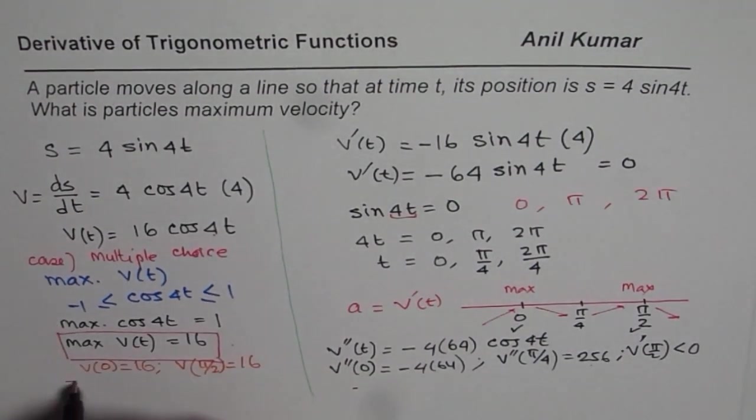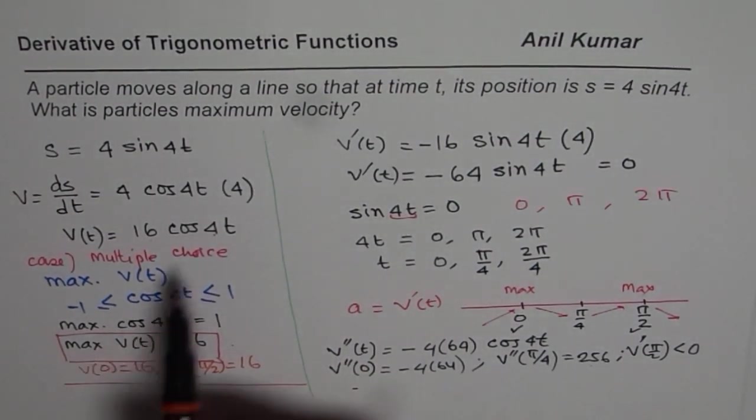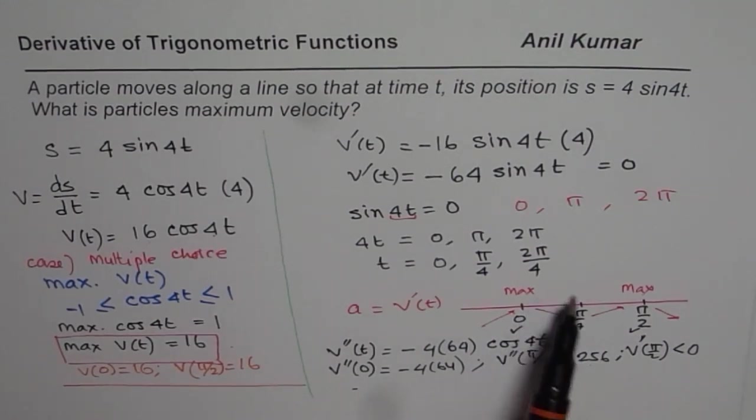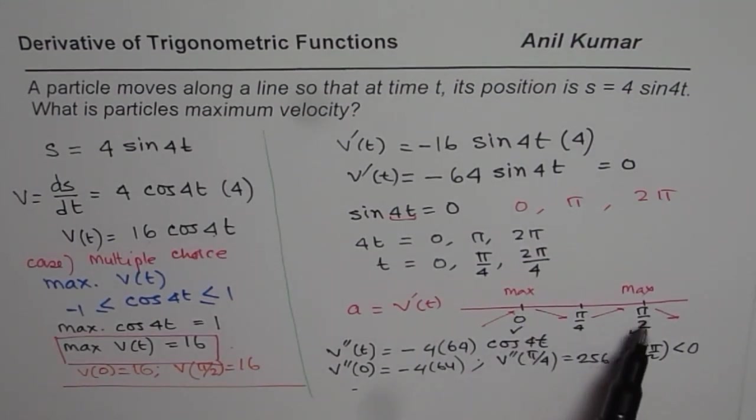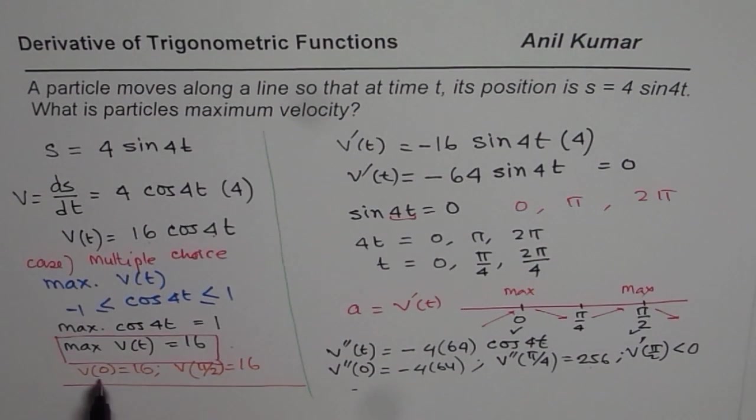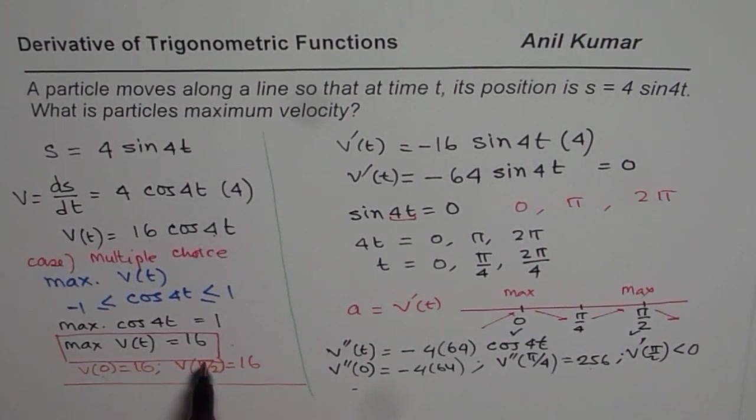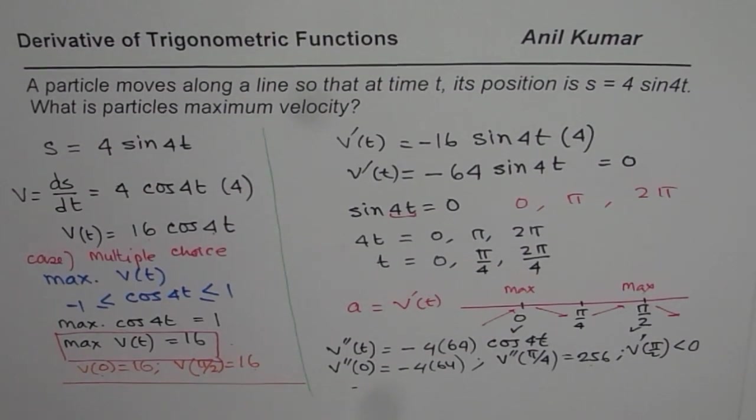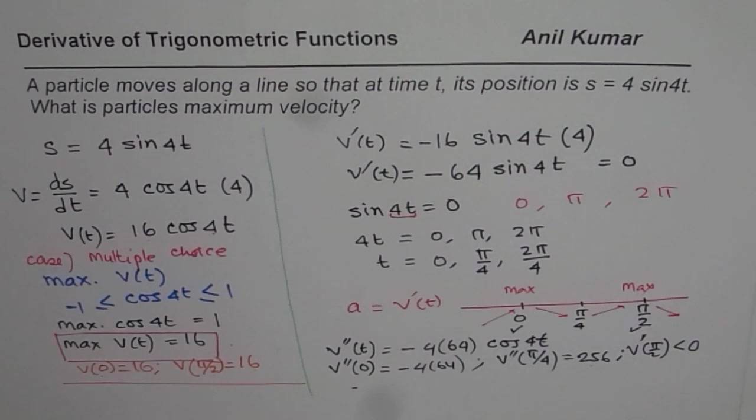So if the question is find the time when we have the maximum velocity, then it may be necessary for you to do the needful. So at t equals to 0 and at t equals to pi by 2, we will have maximum value of 16. So that is how it could be done. I hope that helps. Thank you and all the best.